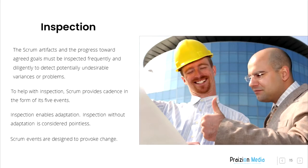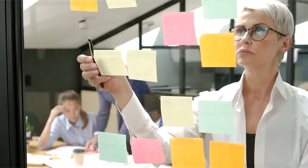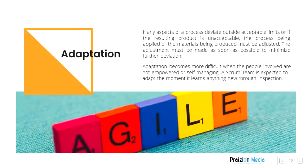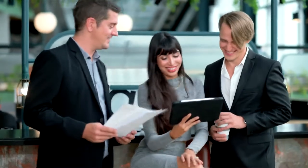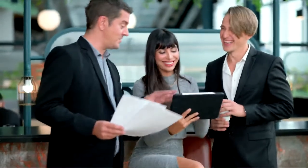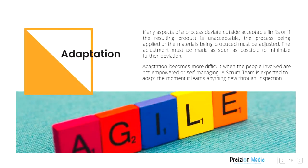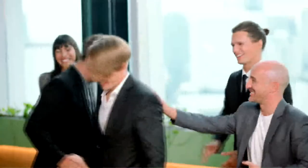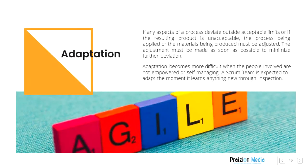Inspection without adaptation is considered pointless. Scrum events are designed to provoke change. Adaptation. If any aspects of a process deviate outside acceptable limits or if the resulting product is unacceptable, the process being applied or the materials being produced must be adjusted. The adjustment must be made as soon as possible to minimize further deviation. Adaptation becomes more difficult when the people involved are not empowered or self-managing. A Scrum Team is expected to adapt the moment it learns anything new through inspection.